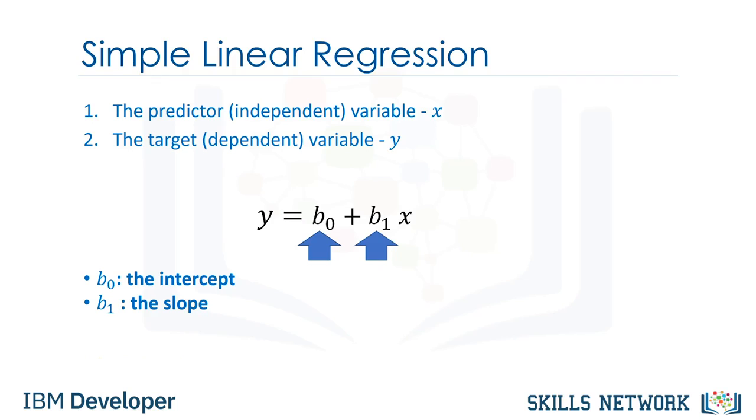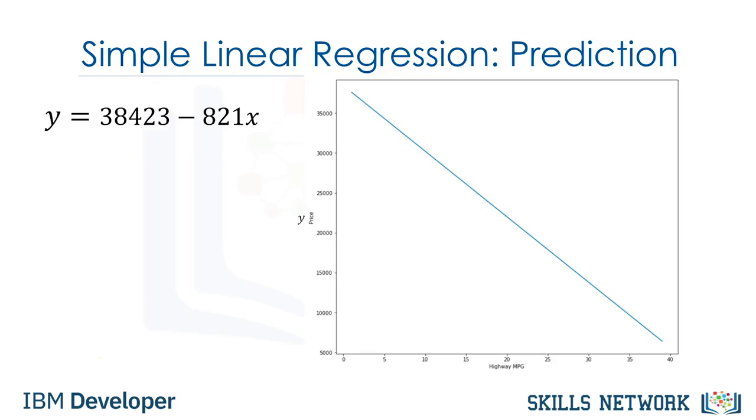Let's clarify the prediction step. It's hard to figure out how much a car costs, but the highway miles per gallon is in the owner's manual. If we assume there is a linear relationship between these variables, we can use this relationship to formulate a model to determine the price of the car. If the highway miles per gallon is 20, we can input this value into the model to obtain a prediction of $22,000.